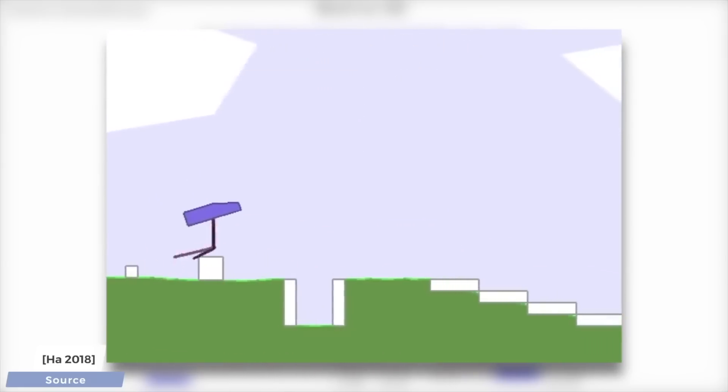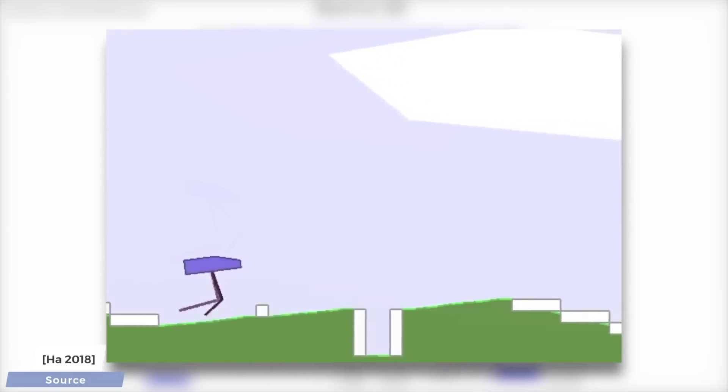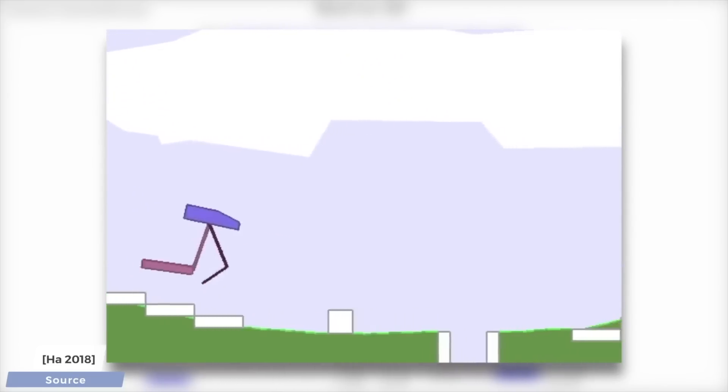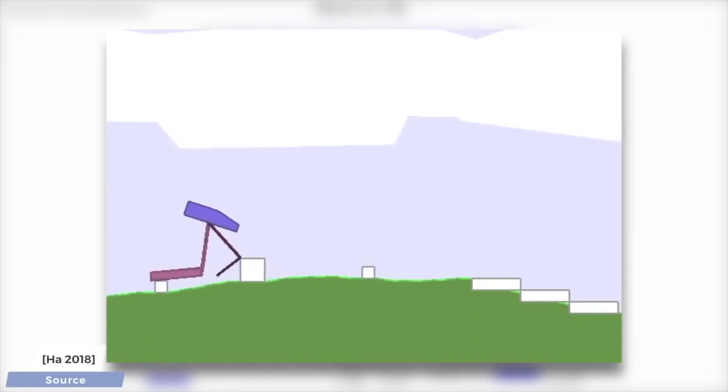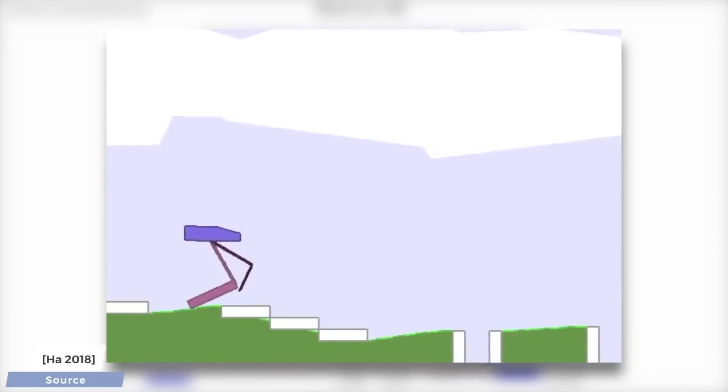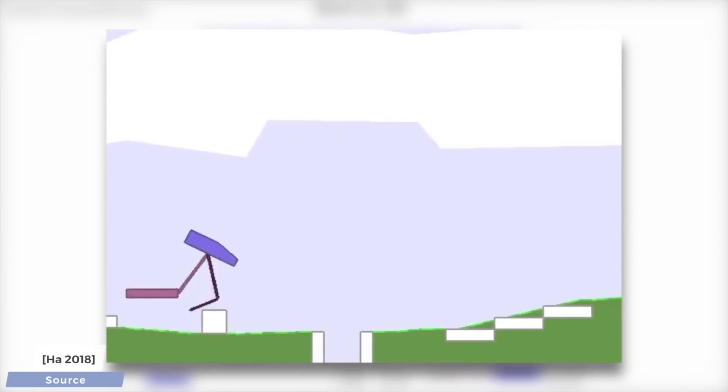And here comes something even cooler. If we change the terrain, the design of an effective agent also changes accordingly, and the super interesting part here is that it came up with an asymmetric design that is able to climb stairs and travel uphill efficiently. Loving it!